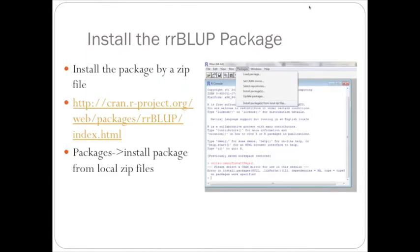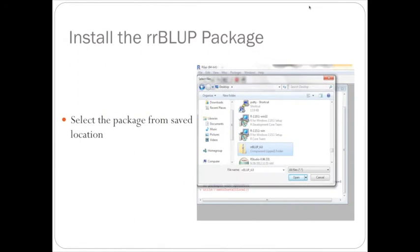Another way to install packages is to install them by a zip file. So, if you go to the CRAN website for ridge regression BLUP, and then load the package by going to the Packages menu, and then install packages from local zip file, and then just select wherever you've saved that zip file that you downloaded online, and just hit Open, and that will load the package, too.